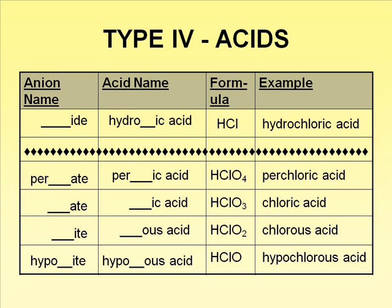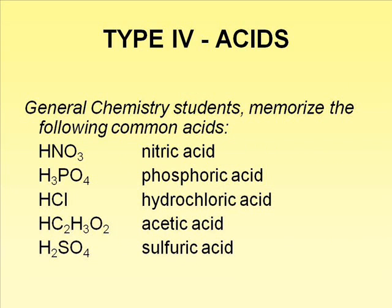The rest of the chart is devoted to acids containing a polyatomic ion. If the polyatomic ion has a prefix, keep the prefix. Change -ate endings to -ic and -ite endings to -ous. If you are a student in my general chemistry class, instead of learning the rules for naming acids, you may simply memorize the names of these five common acids.